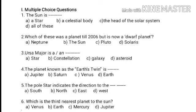Next: which is the third nearest planet to the Sun? First option, Sun; second option, Earth; third option, Mercury; fourth option, Jupiter. Which is the correct answer? The Earth is the correct answer.